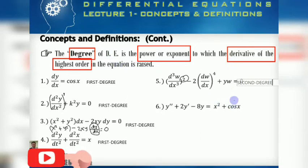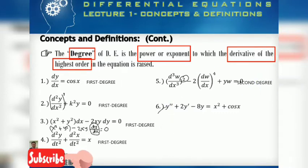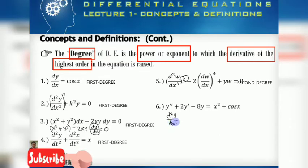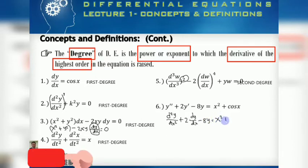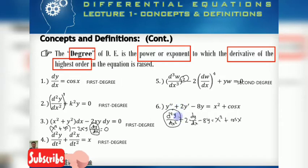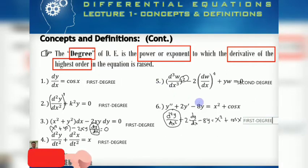For example six, rewriting: second derivative of y with respect to x plus 2 times dy over dx minus 8y equals x squared plus cosine x. The highest-order derivative is the second derivative of y, and it is raised to the exponent one, so this is a first-degree differential equation.